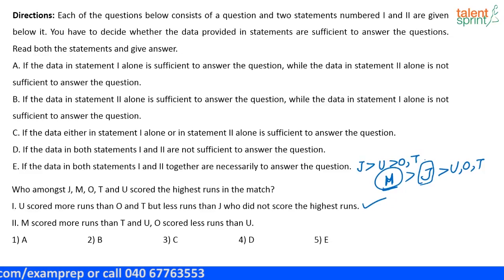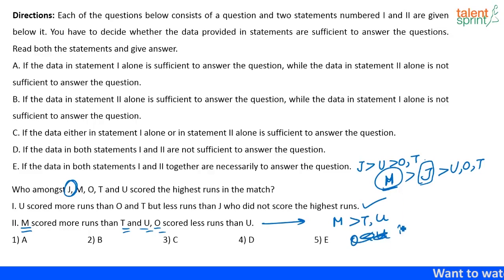Now, look at the next statement. M has scored more runs than T and U. O has scored less than U. Okay. So, or here I can say M has scored more than T and U and U has scored more than O. Again, based on this, you don't know anything about J.